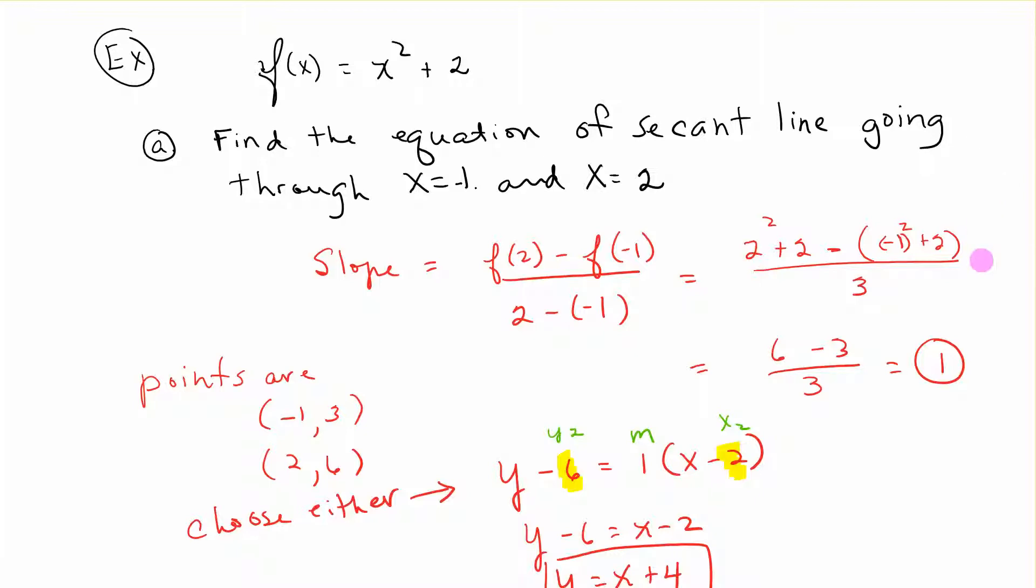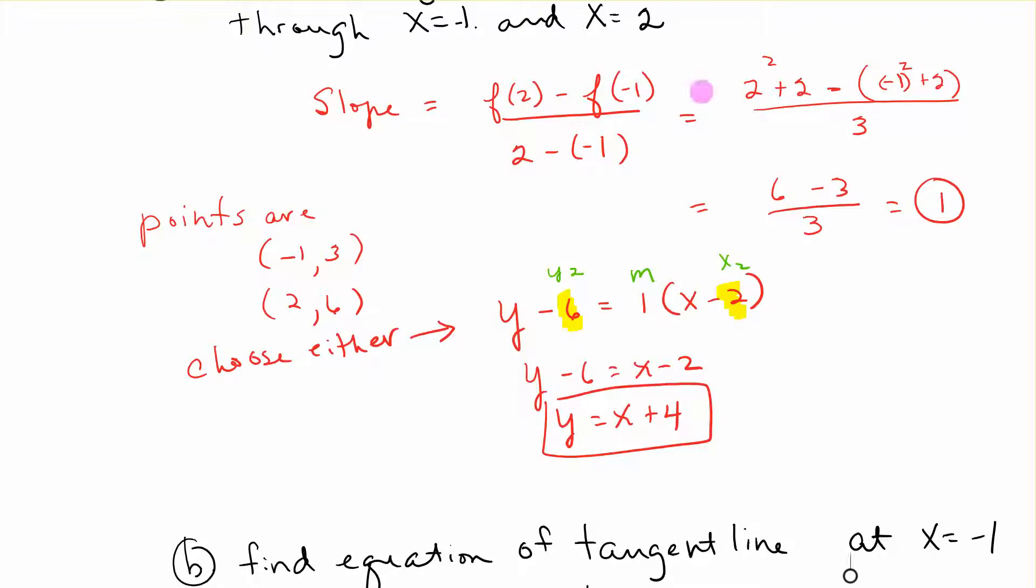Now we just have the slope and we were asked to find the equation of the line. The points we figured out were (-1, 3) and (2, 6). Choose either point. I chose (2, 6). Use the point-slope formula: y - y₁ = m(x - x₁). Plug in your parts. Your slope is 1, x is 2, y is 6. You clean that up and you end up with y = x + 4, the equation of the secant line.